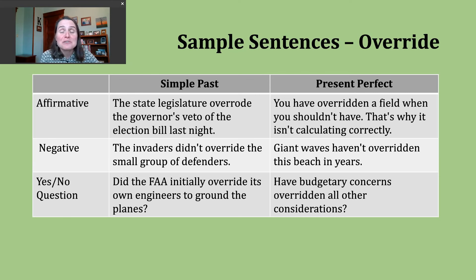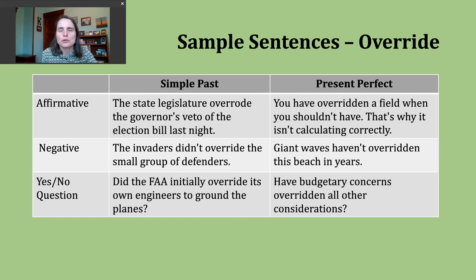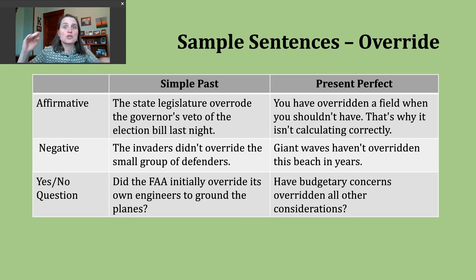Finally, let's take a look at making a yes or no question in the present perfect. To do this, start with have or has, then your subject, then the participle form of the verb. Have budgetary concerns overridden all other considerations? This question goes back to our second definition — take precedence, be most important beyond all other concerns. It might be a question a board of directors is asking as they make some type of plan: is this controlling or taking precedence over all other issues being considered?